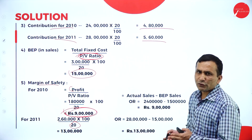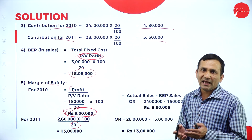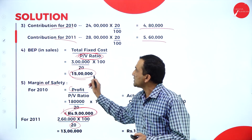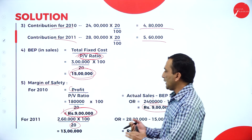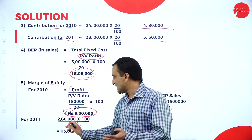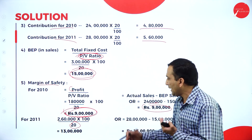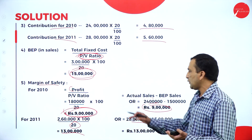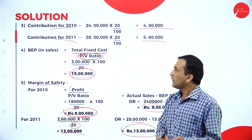For 2011, profit is 2,60,000. Applying the formula: 2,60,000 divided by 20 into 100 gives margin of safety of 13 lakhs. Confirming with the second formula: actual sales for 2011 (28 lakhs) minus BEP sales (15 lakhs) also gives 13 lakhs — same answer.